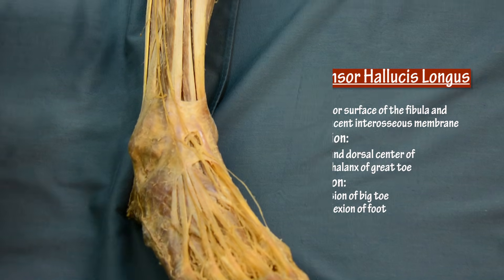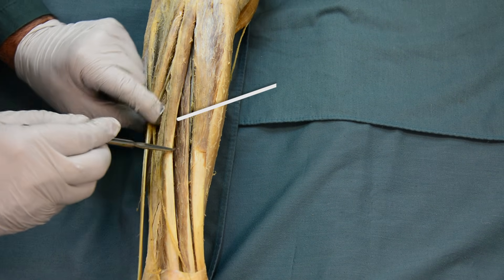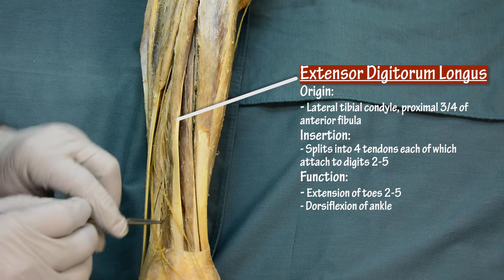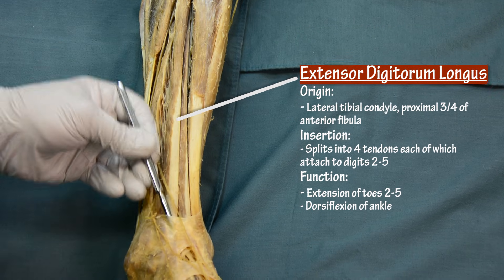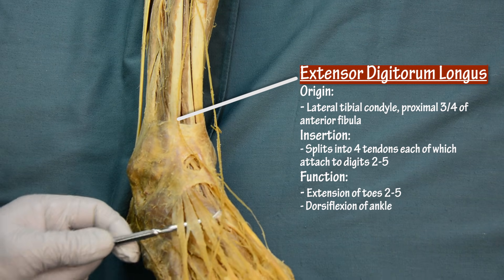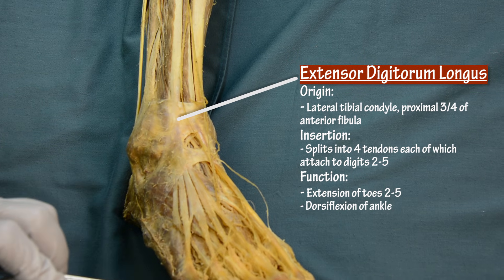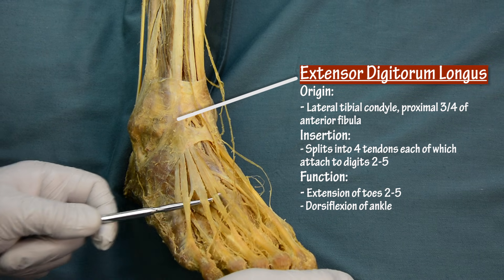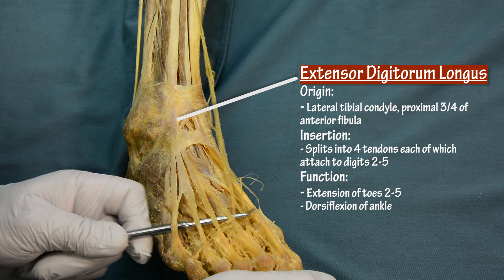Now let's go with the next muscle — extensor digitorum longus. This is another muscle of the anterior compartment of the leg, sitting on the lateral side. The tendon passes under the extensor retinaculum, and when it comes to the dorsum of the foot it divides into four tendons going to toes two through five. When we call a muscle 'digitorum,' it goes to digits two to five.